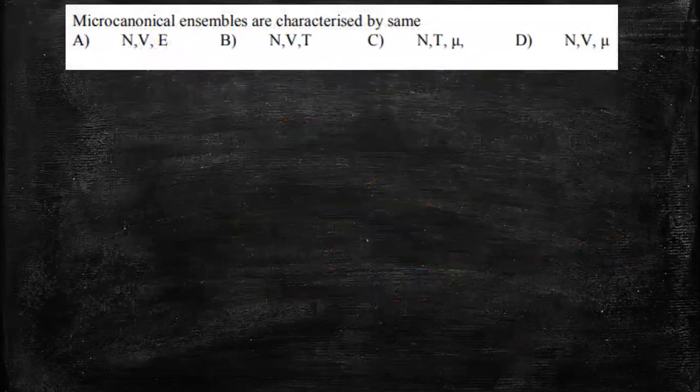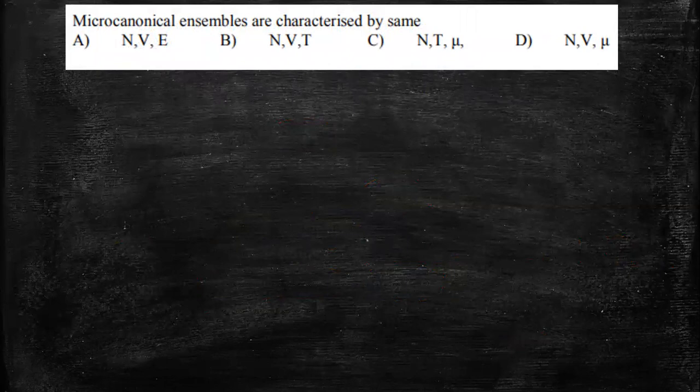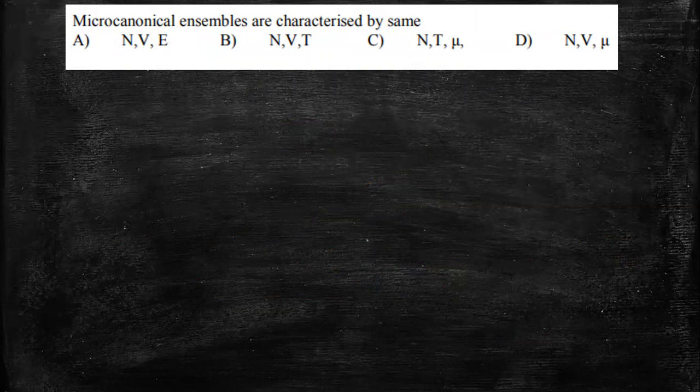Next, this is from statistical mechanics. Microcanonical ensembles are characterized by the same. So this is a conceptual question. That is why I have covered this because I want you people to know the concepts related to ensembles and what does their name mean.